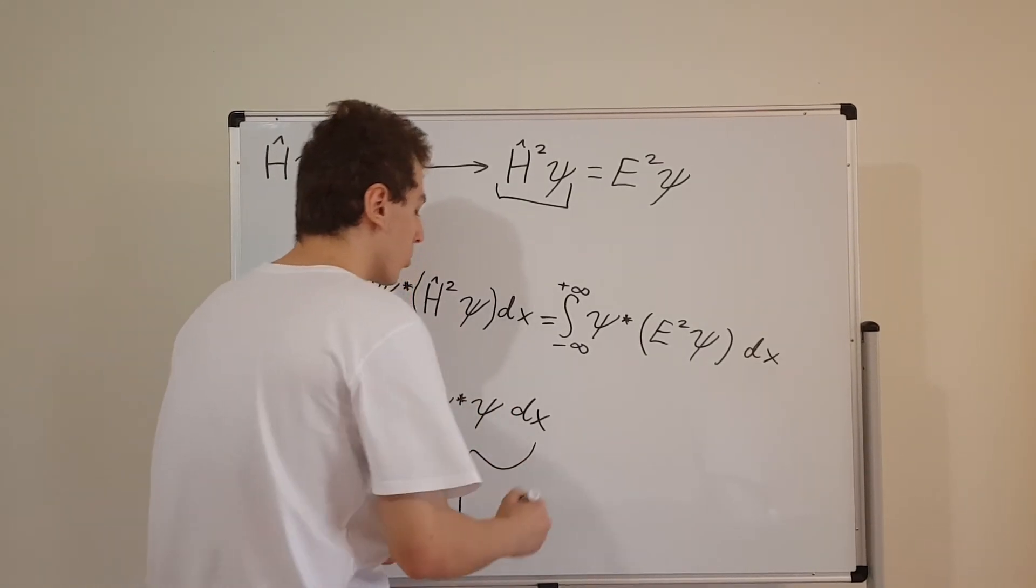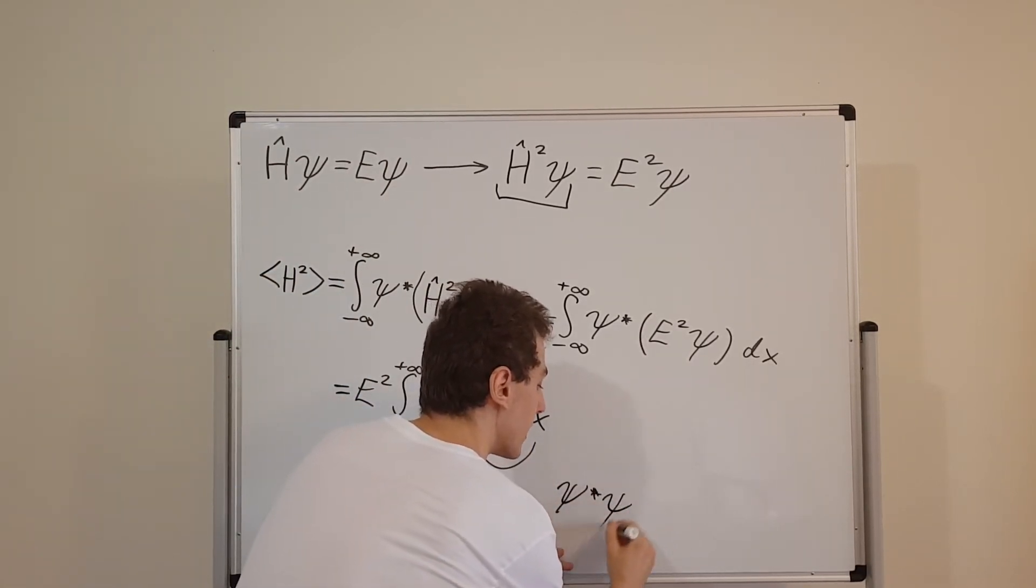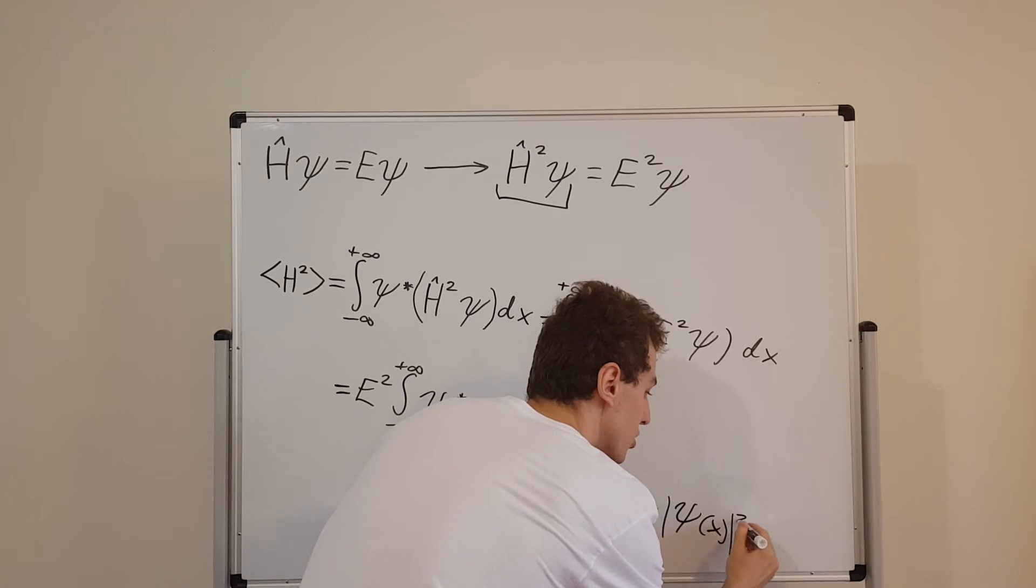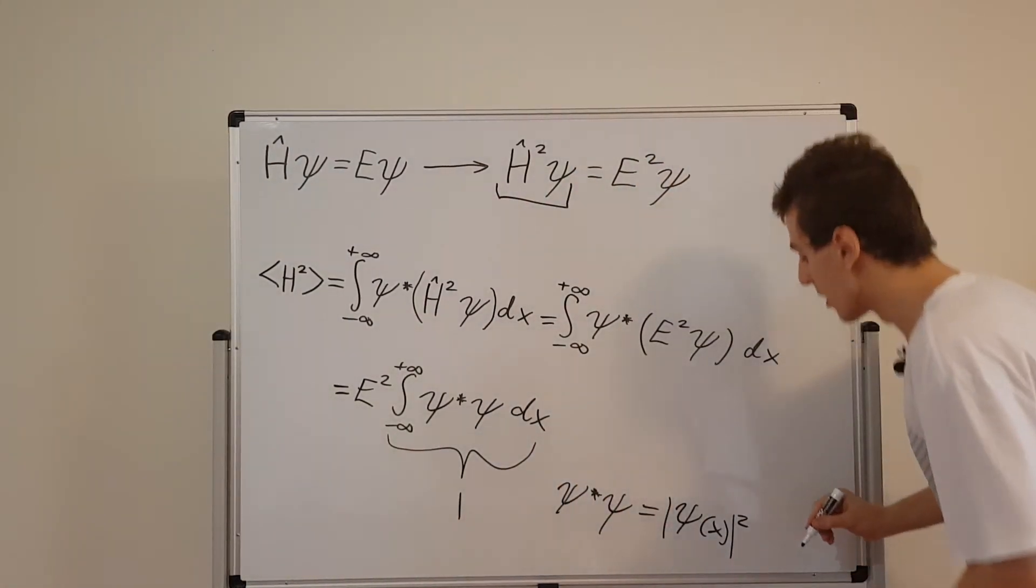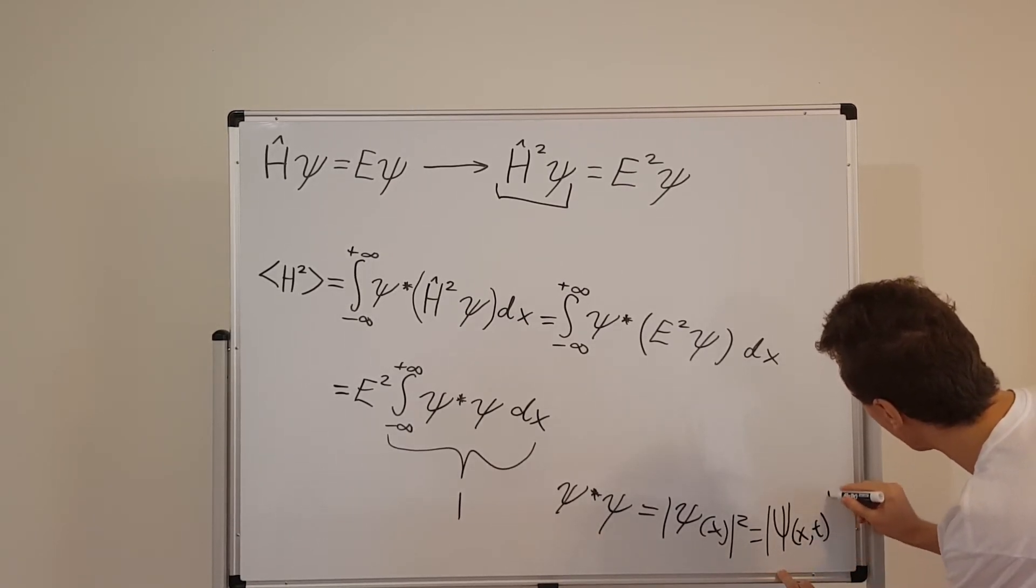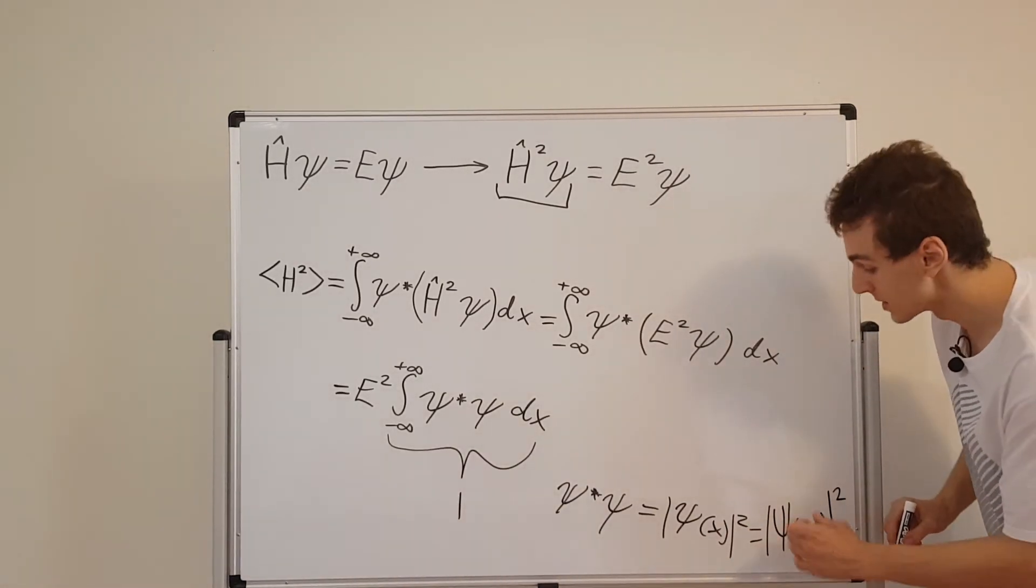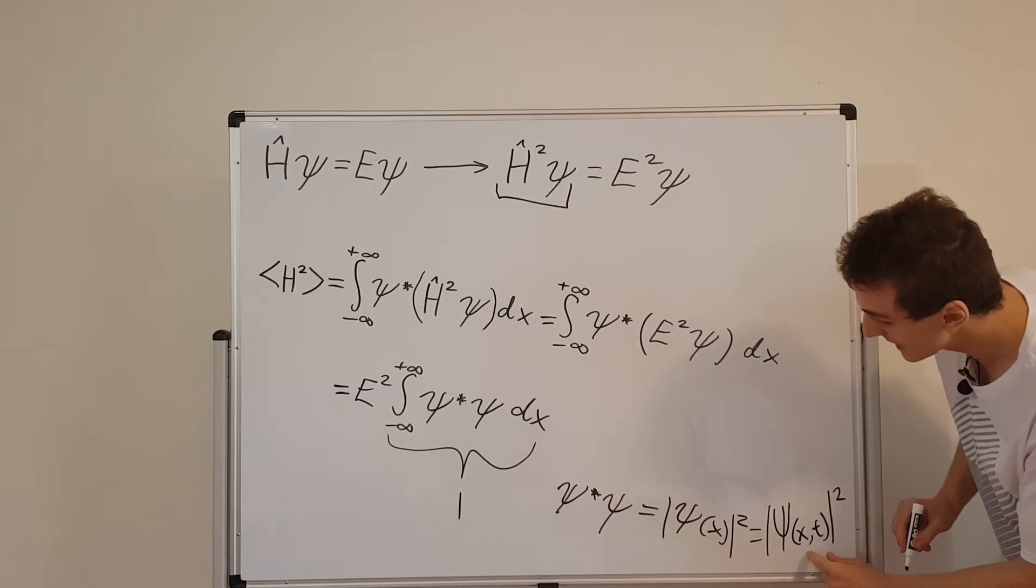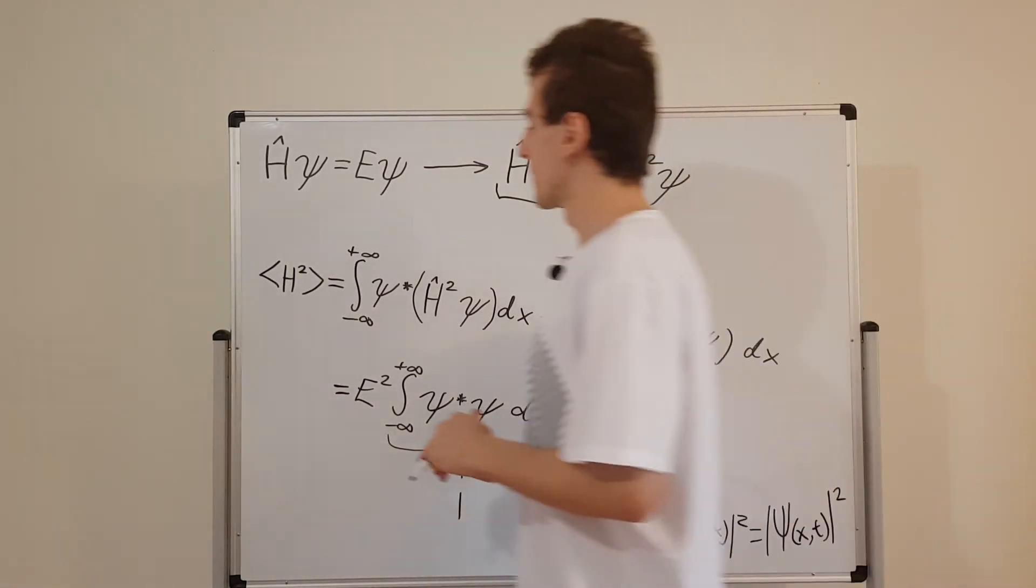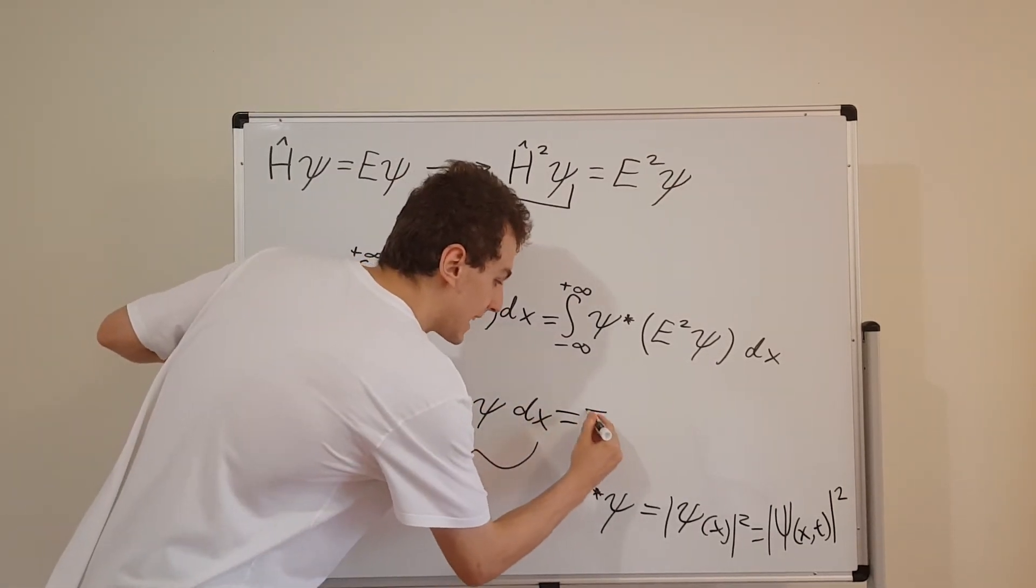Now, why is that actually equal to one? Well, it's because this is the same psi star times psi is actually the same as this guy over here. It's the same as psi of x magnitude squared. And we know this is the probability density function, which is equal to capital psi, which depends on x and t, and that magnitude squared. So how do we know this? Well, that's actually the first video in this mini series on stationary states. We found that the probability density function doesn't have a time dependence for these special states, which are stationary states. So this guy is just equal to one. This whole integral evaluates to one, and that's just going to give us E squared.